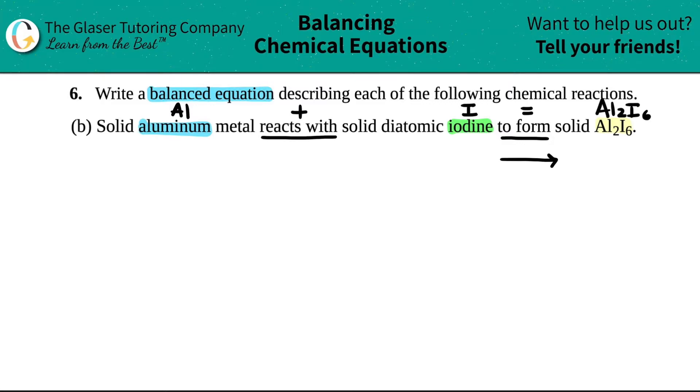So if we just put the basics together, so Al reacting with plus iodine, so I'm just going to put I for now, to form equal, but in chemistry it's a yield. And they tell me it's Al2I6. There you go. So this is how we say it in chemistry terms. These two things came together to form this.